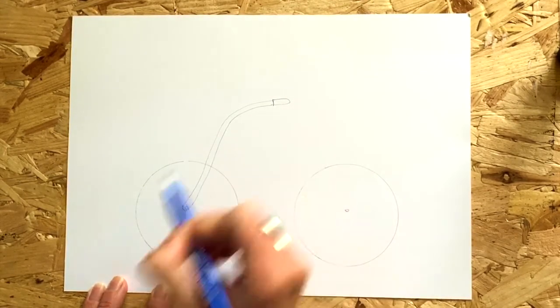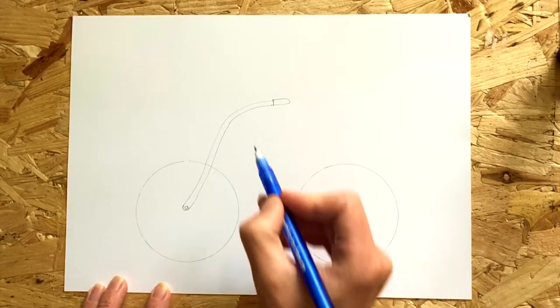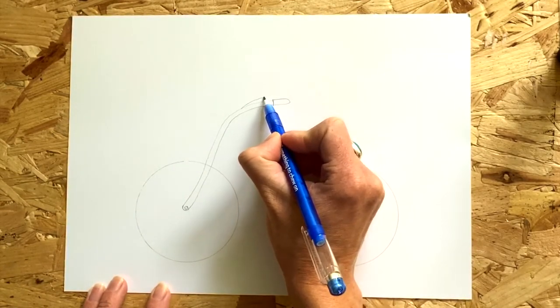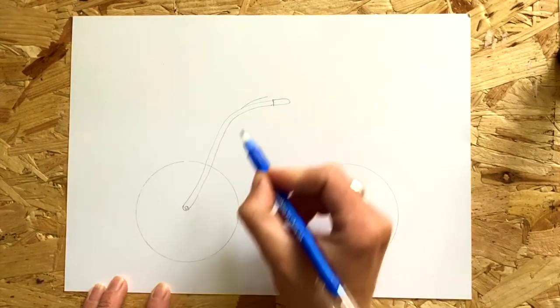Then join it up and add some handles. Add a shorter line from your long line to create the second handlebar.